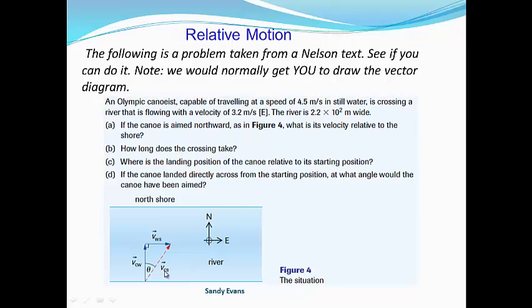So it would be v_CS, or velocity of canoe with respect to shore, equals velocity of the canoe with respect to the water plus the velocity of the water with respect to shore. These two vectors will add up to give me what direction the canoeist really ended up traveling in.